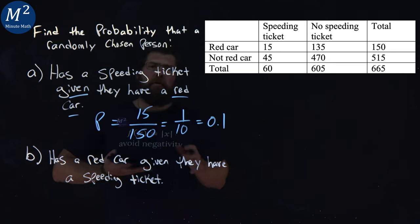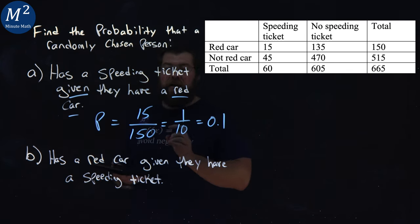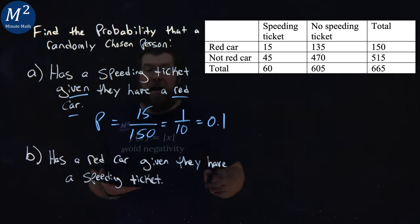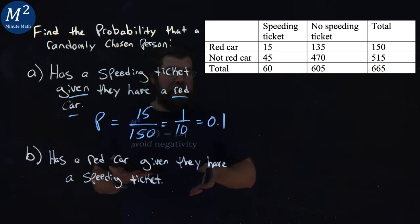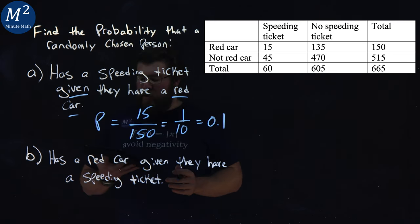Now let's kind of reverse this with part B: has a red car given they have a speeding ticket. The group of speeding tickets, the first column, has a total of 60.